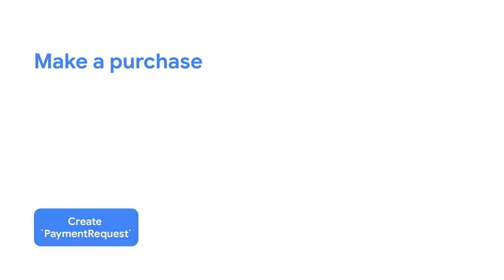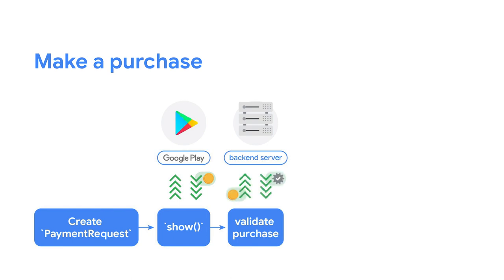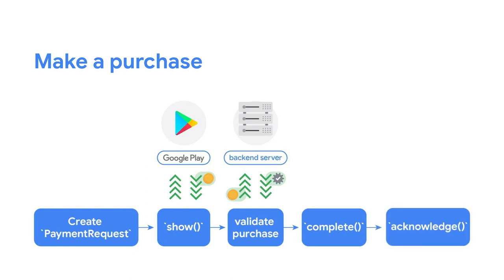Now that we've looked at some code snippets, let's have a look at the whole flow again to understand how the two APIs interact with Google Play and your backend server. First, create a new PaymentRequest object and call the show method — this launches the Play Billing UI. Once the user completes the payment, a purchase token is returned from Play. We highly recommend that you validate the purchase token with your backend to help prevent fraud. Then call complete on the returned PaymentResponse to close the Play Billing UI. Finally, acknowledge the purchase and update the UI to let the user know they've been successful, and don't forget to grant the proper entitlements and benefits of their new purchase to the user.